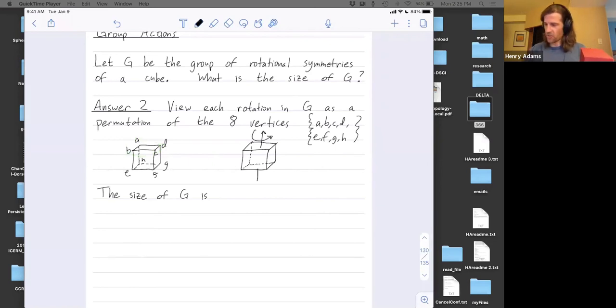So the size of this group G is we're going to do the same pattern. We're going to fix our favorite vertex. Let's think of this vertex right here. So it's going to be the number of rotations mapping vertex A to itself. Let's call this vertex A.